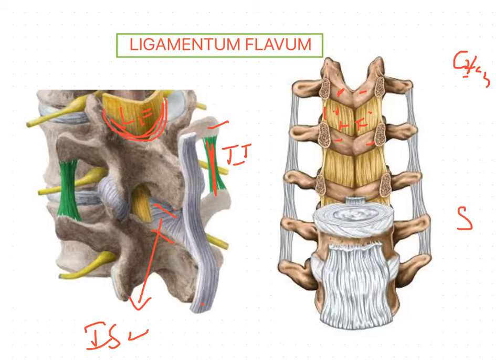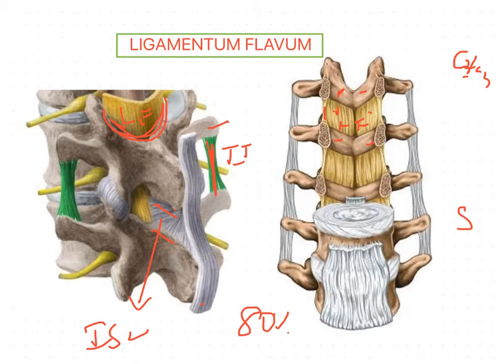This ligament forms the smooth posterior surface of the vertebral canal. It is also called the yellow ligament because the fibers of the ligamentum flavum consist of 80% elastin fibers and 20% collagen fibers. The high percentage of elastin — 80% — gives the ligament its yellow color and also provides it with a flexible, elastic nature.